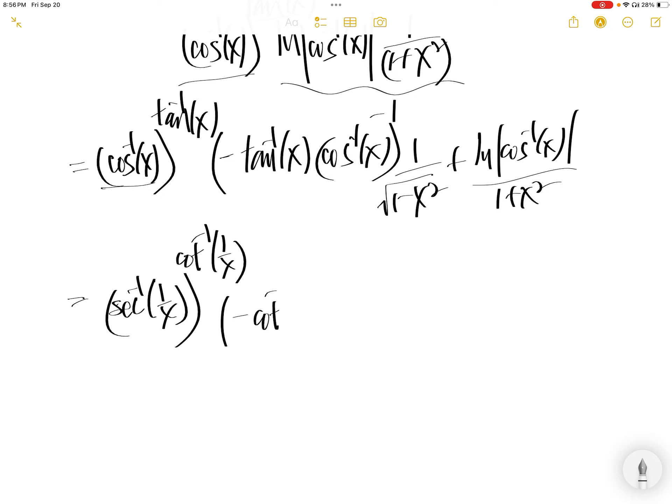Arc cos of 1 over x, and then this is divided by arc cos. Arc cos x, this is arc sec 1 minus x. Arc cos of 1 over x, and then this is divided by 1 plus x squared.